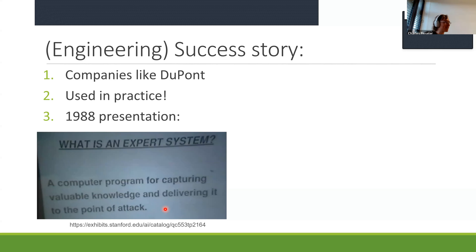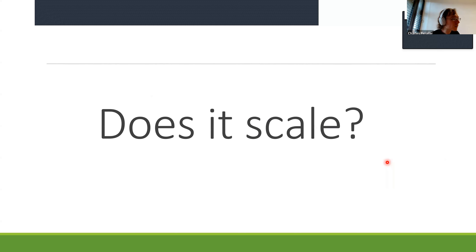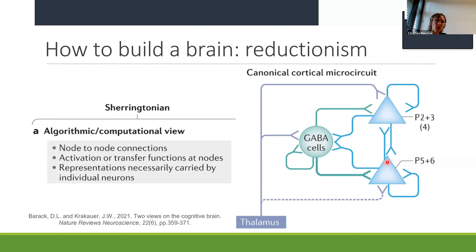I really like this slide from a 1988 presentation: 'computer programming for capturing knowledge and delivering it to the point of attack' — a very 80s way of talking about business. One of the things they were doing, which is similar to some stuff we're trying to do with AI now, is to take a complicated, distributed, sometimes contradictory knowledge base and align it into one agent with all that knowledge. Of course, the canonical example now is something like ChatGPT, which takes a huge heterogeneous set of data and gives you one agent you can talk to.